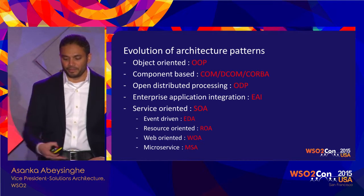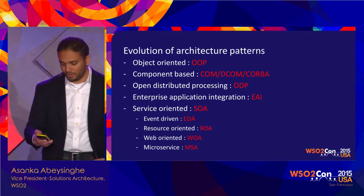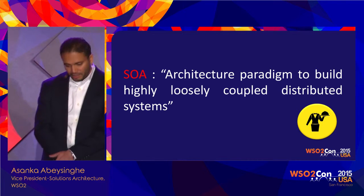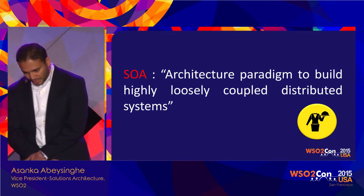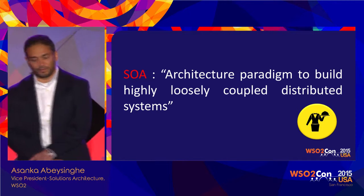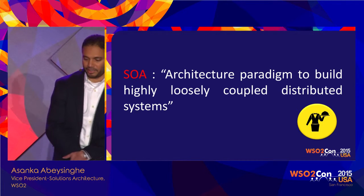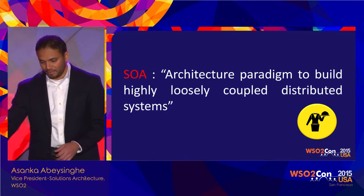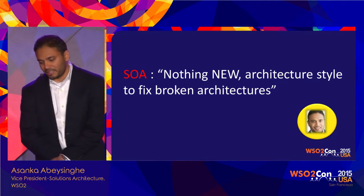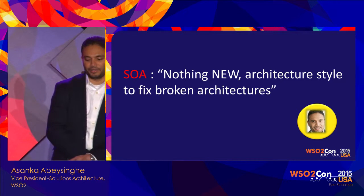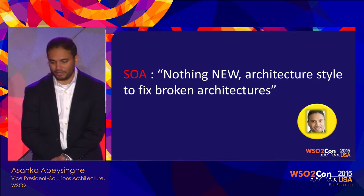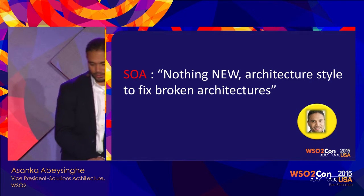We were struggling with earlier patterns, and SOA came to provide solutions. In textbooks, SOA is described as an architecture pattern for building highly loosely coupled distributed systems. But my definition is different — it's an architecture style you can use to fix broken architectures and apply different types of principles.